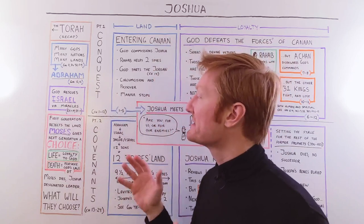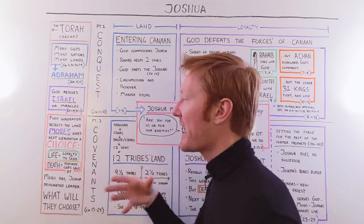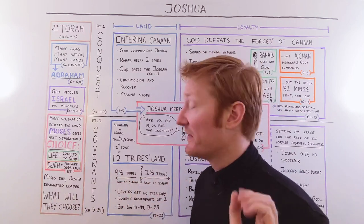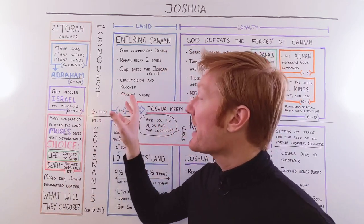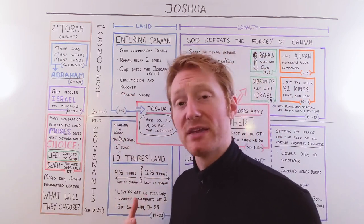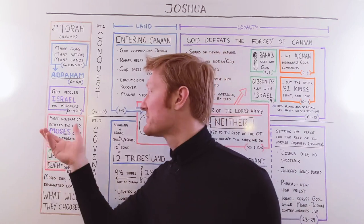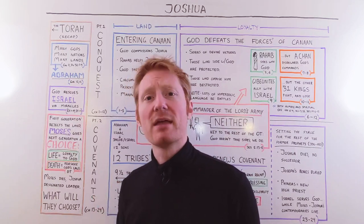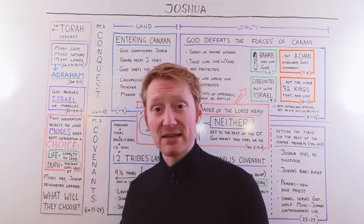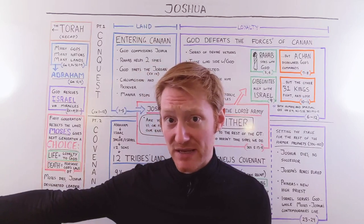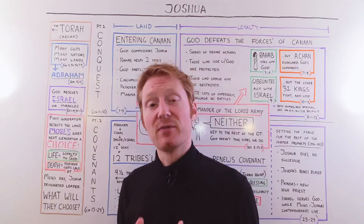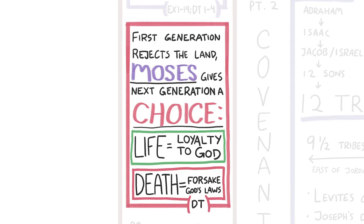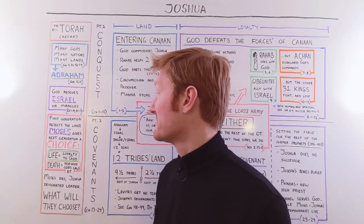God rescues Israel in this dramatic scene where he parts the waters of the Red Sea and they pass on dry ground — which is going to be mirrored very soon in the book of Joshua. Then God leads Israel through the wilderness on their way to the promised land. But the generation of Israelites that God rescued forfeits the promised land. They choose not to go in, so God holds them in the wilderness for 40 years so that the next generation can choose whether or not they're going to trust God and take the land.